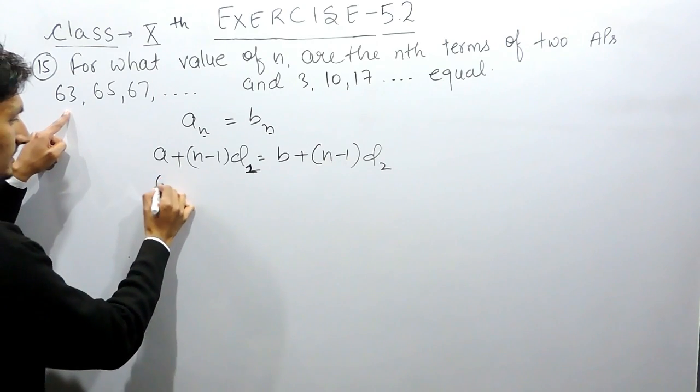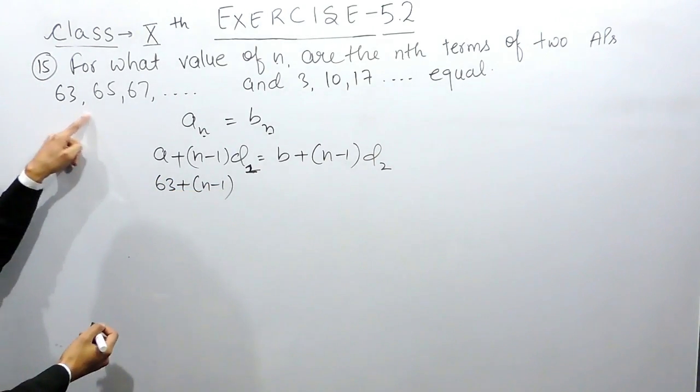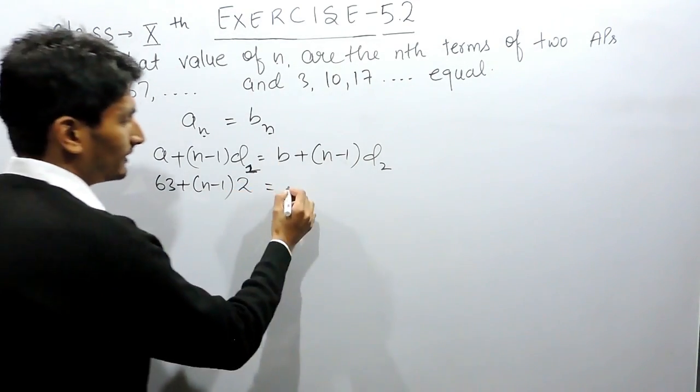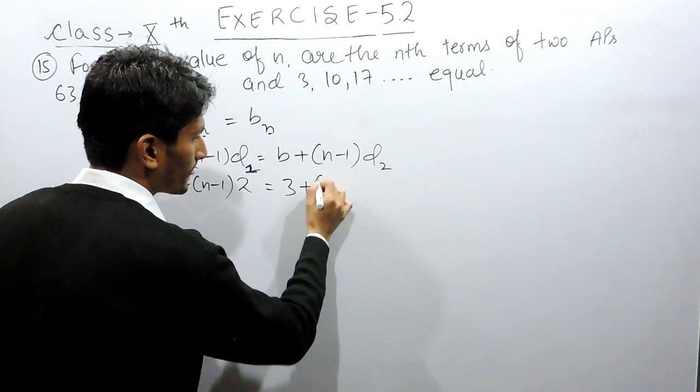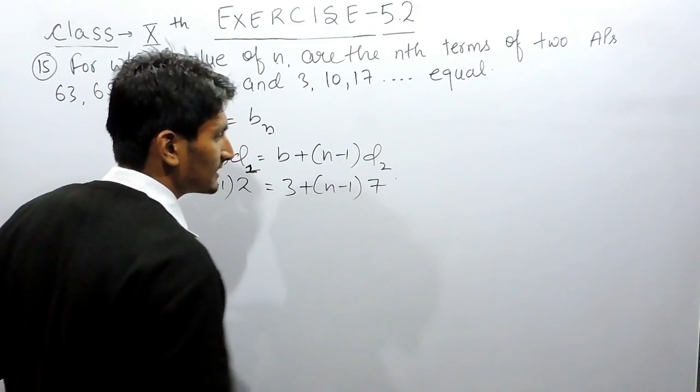For this the first term is 63, n minus 1 you have to find out, and the common difference is 2. For this the first term is 3, n minus 1 you have to find, and in this case the common difference is 7.